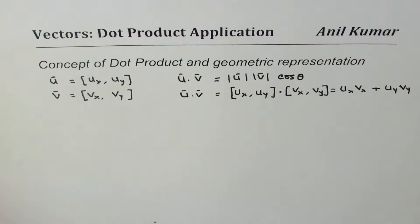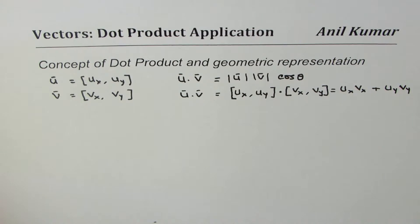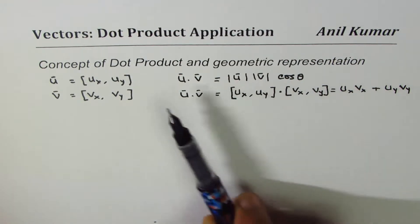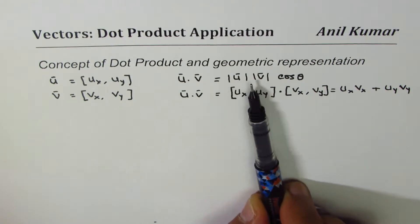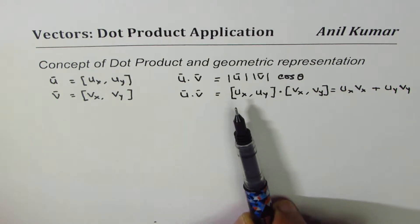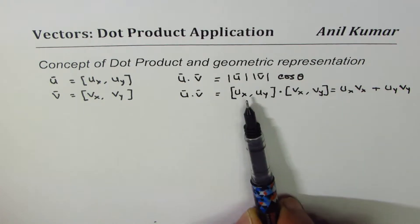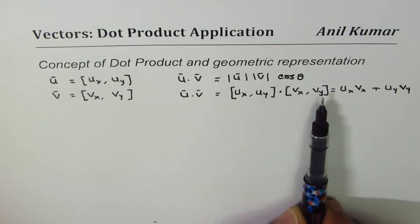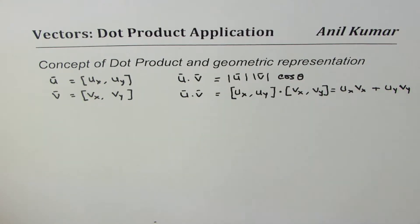So that's what we get. Now the question is: why do we have these two formulas, and how are they linked? In this video we are going to understand the link between the two most commonly used dot product formulas: u dot v equals magnitude of u times magnitude of v times cosine theta, and u dot v equals the sum of products of their x and y components.